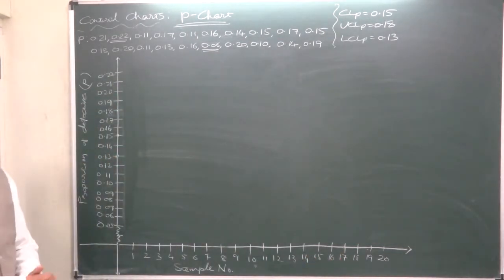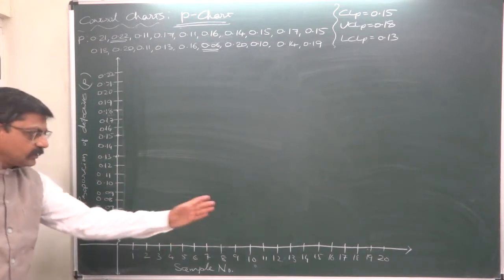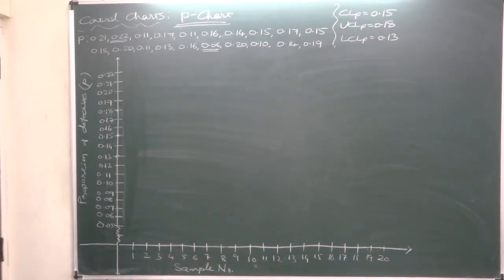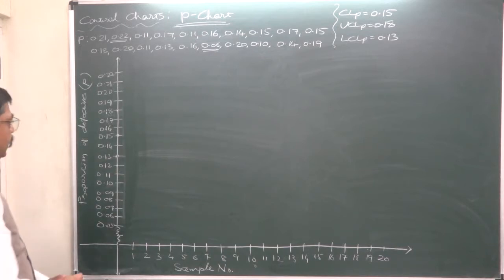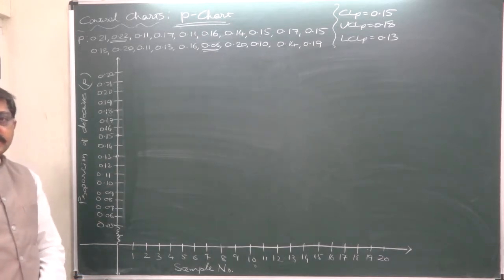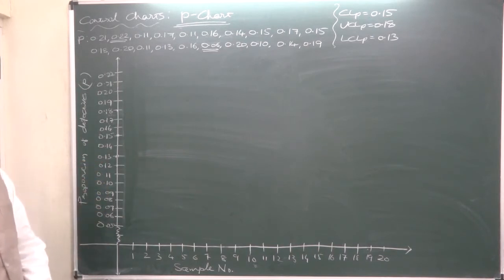The range of the Y-axis is determined in this way. On the X-axis we write the sample number: first, second, third, and so on. Before plotting the values of P, we first need to draw the control lines — that is, the control limits.